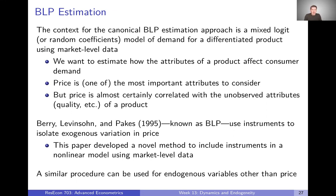We'll talk through the math and the model, but really I want you to get just a high-level understanding of what's going on here. The context here is a mixed logit or random coefficients model of demand for a differentiated product using market-level data. So we don't have the kind of micro data that we've been used to using in this class — just market-level data. We just see things like market shares, for example.